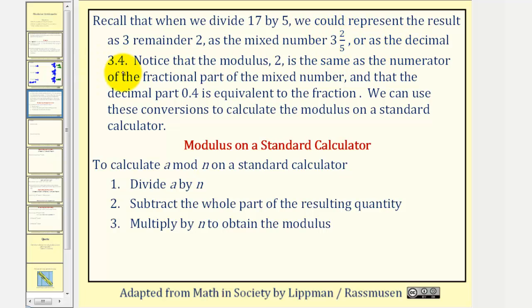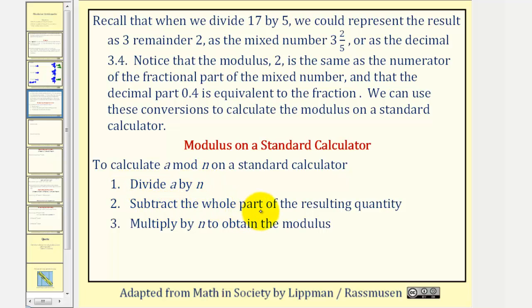Recall that when we divide 17 by five, we could represent the result as three remainder two, as the mixed number three and two-fifths, or as a decimal, 3.4. The modulus two is the same as the numerator of the fractional part of the mixed number, and the decimal part 0.4 is equivalent to that fraction. We can use these conversions to calculate the modulus on a standard calculator. For a mod n, we divide a by n, subtract the whole number part of the resulting quantity, then multiply by n to obtain the modulus.